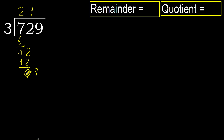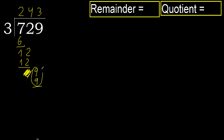Next, bring down: eliminate 0. 9. 3 multiplied by 4 is 12, which is greater. Multiply by 3 is 9, which is not greater. Subtract.